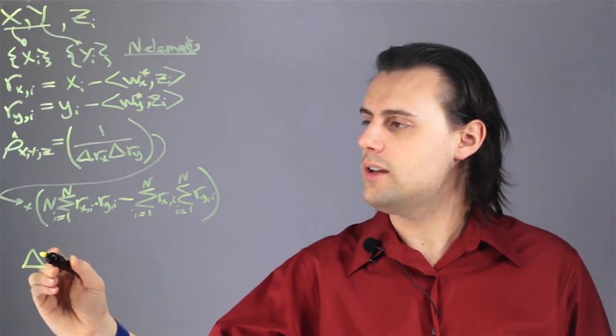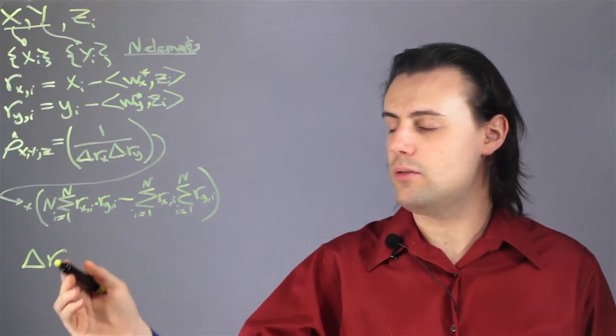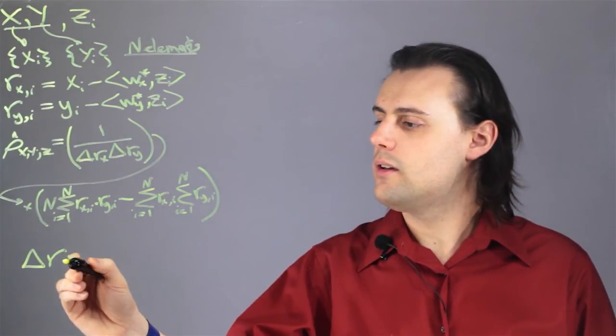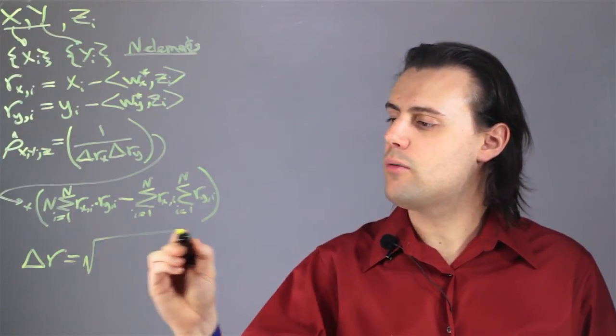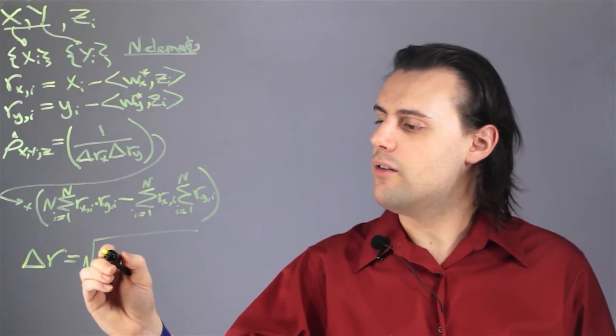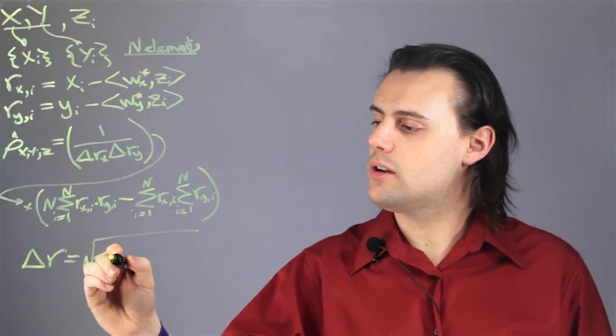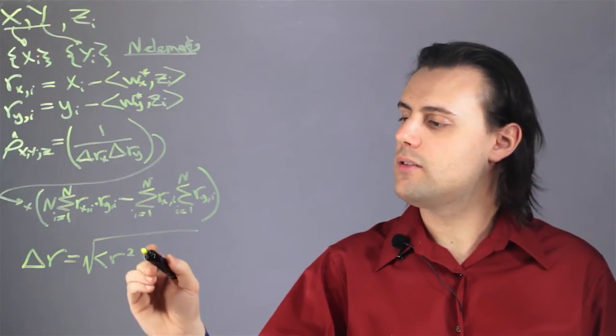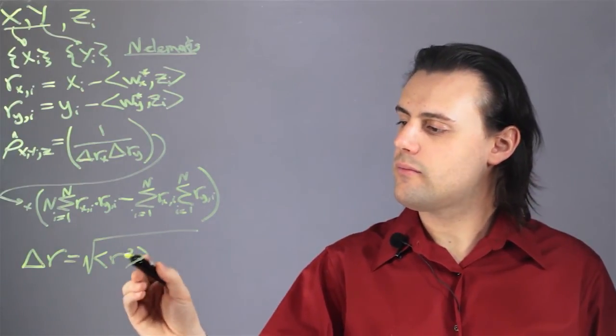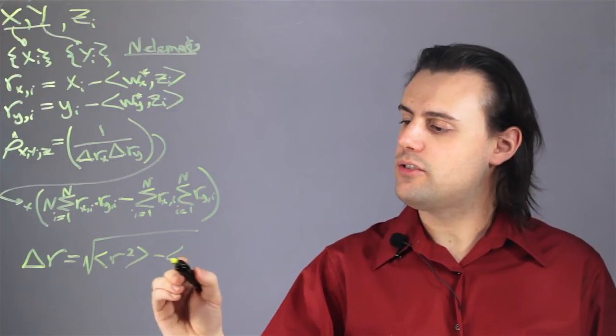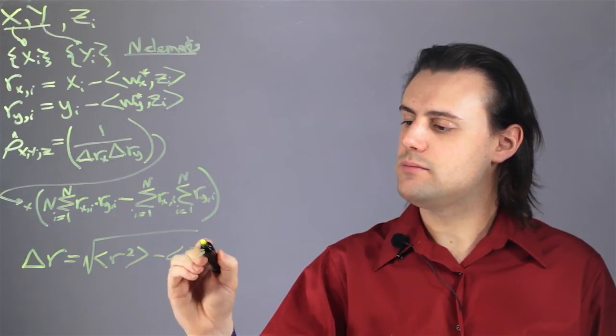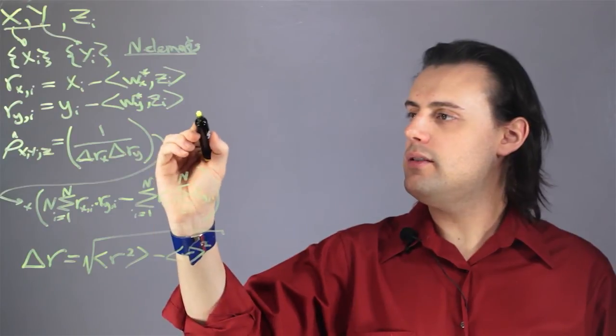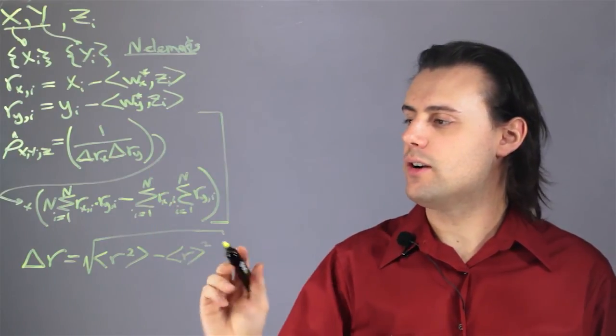The uncertainty in a residual or any variable is equal to the square root of the average of that variable squared minus the square of the average. And this is our partial correlation function.